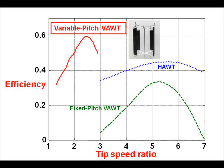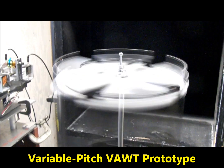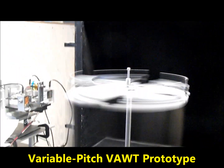The potential of the variable pitch turbine has been realized for a long time, but variable pitch vertical axis wind turbines designed in the past used complicated and expensive pitching mechanisms that could not be implemented on a commercial turbine. The present idea is to develop a revolutionary, extremely efficient, small-scale variable pitch vertical axis wind turbine with a simplified blade pitching mechanism.